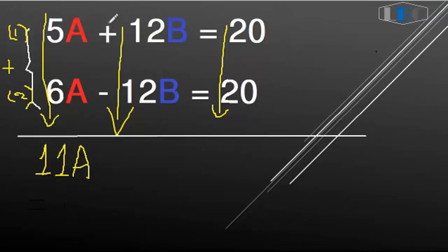Then 12B plus negative 12B will equal 0, and we can write this as 20 plus 20 equals 40. So we can find A.